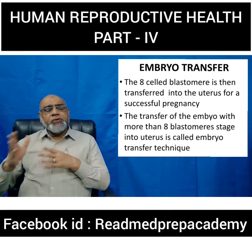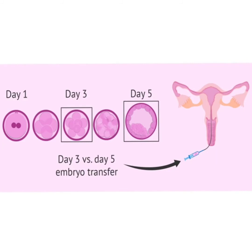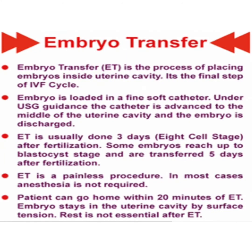The 8-cell blastomere is then transferred to the uterus — this is called the embryo transfer technique. The embryo is prepared from day 3 to day 5. Embryo transfer is the process of placing the embryo inside the uterine cavity and is the final step of the IVF cycle. The embryo is loaded in a fine soft catheter, and under ultrasound guidance, the catheter is advanced to the middle of the uterine cavity where the embryo is discharged. Embryo transfer is usually done at day 3 when the embryo is in an 8-cell stage, or at day 5 in the blastocyst stage. It is a painless procedure and anesthesia is usually not required. The patient can go home within 20 minutes, and the embryo stays in the uterine cavity by surface tension.